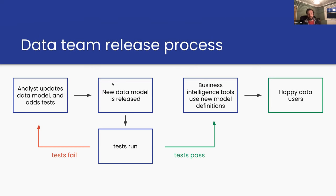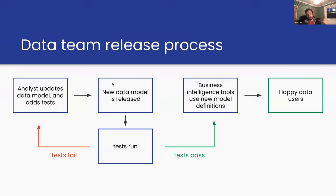For a data team, this looks very similar. An analyst wants to update a data model — maybe adding a new metric or changing how a dimension is defined. They update the data model code, some tests are automatically run. If those tests fail, the analyst is alerted and needs to fix things before any code is released. Once all tests pass, the new version of the data model is released to the production environment — BI tools, reporting dashboards — giving business users tested, high-quality data.